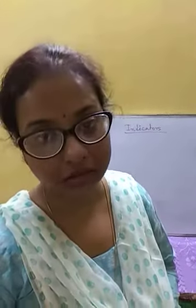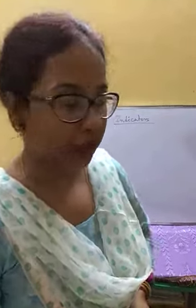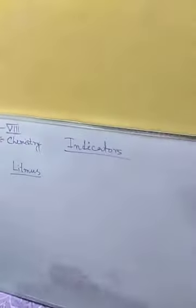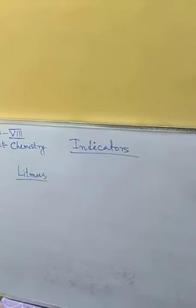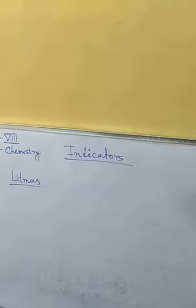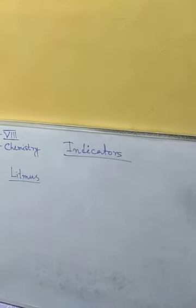Good afternoon children, welcome to today's class. Today we are going to discuss about indicators, and after that we will be discussing about the metal activity series. Indicators are some organic substances which will show definite colors — different colors in acid and basic medium. By this color we can understand whether a solution is acidic or basic. These are the main functions of indicators.